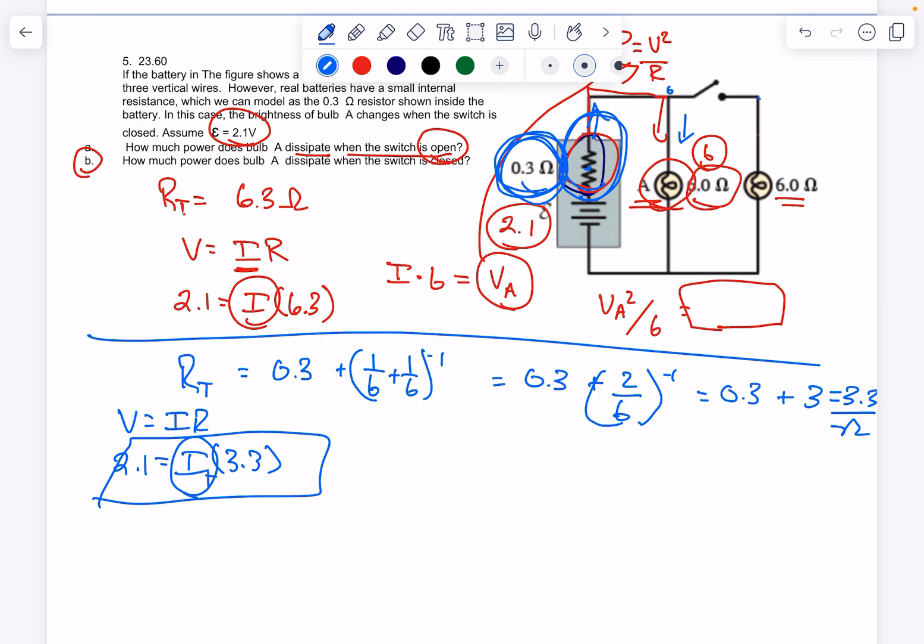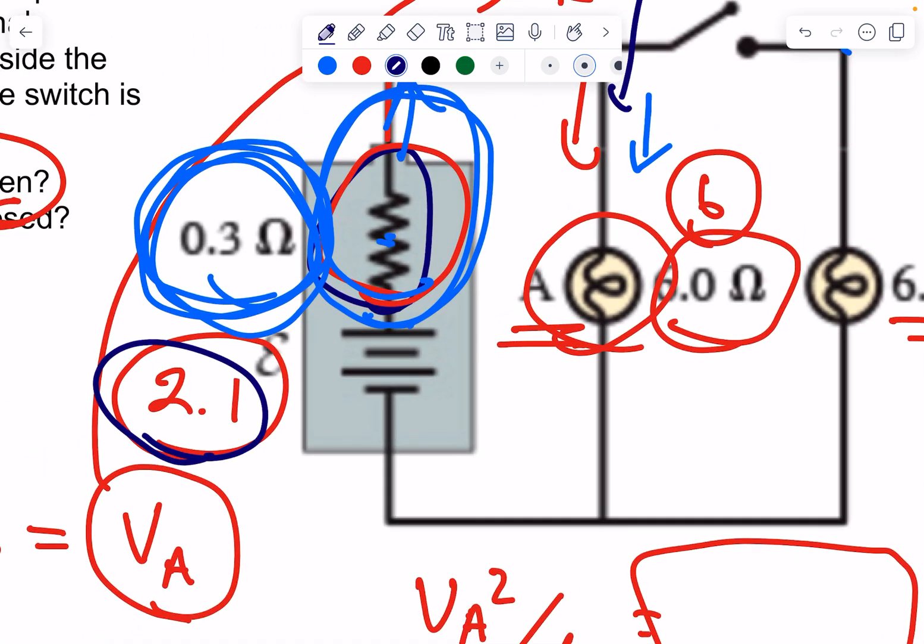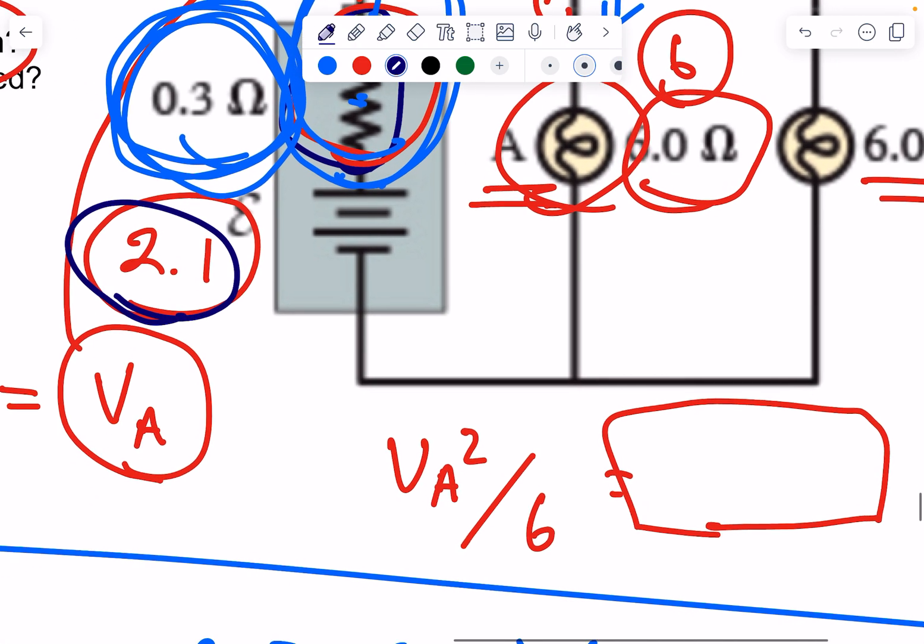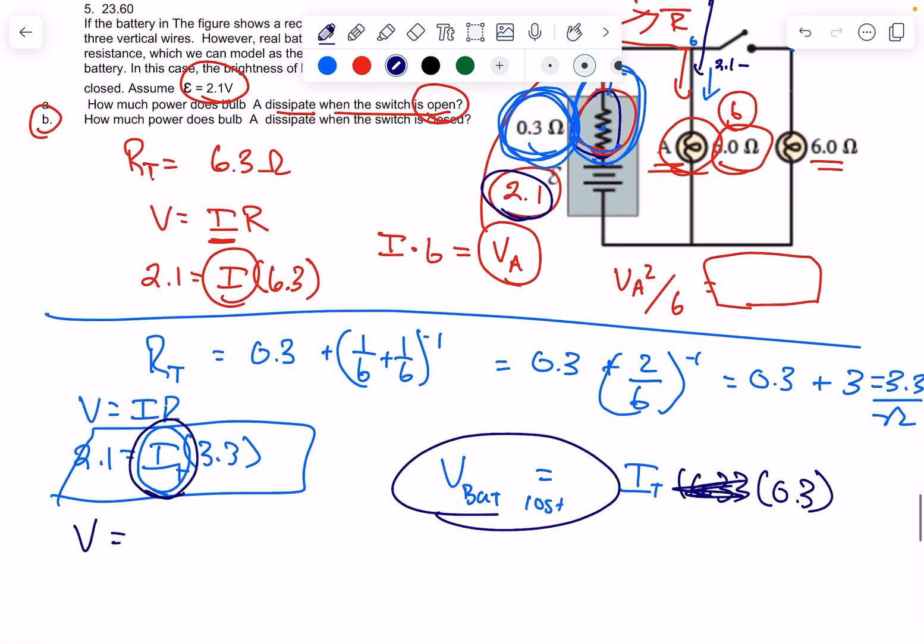The voltage drop would be the voltage of the battery lost, which equals your total current times 0.3. That is the voltage of the battery lost—it's not a very big number. Then the voltage going through this portion of the circuit will be 2.1 minus whatever we got right here.